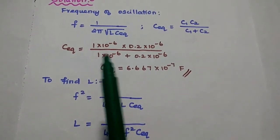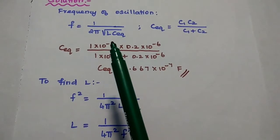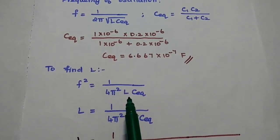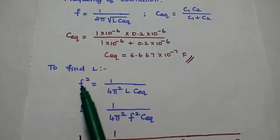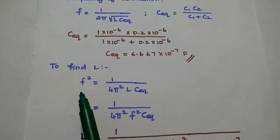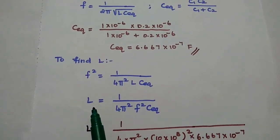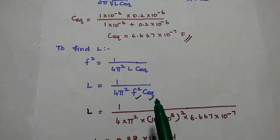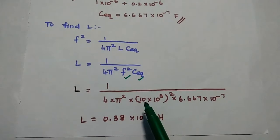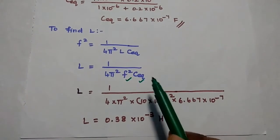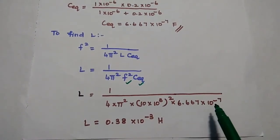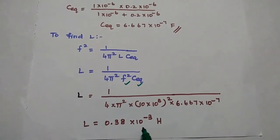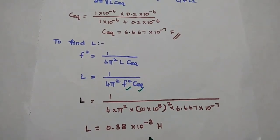Next, we find the inductance value using the frequency formula. Since L is inside the square root, we square both sides to get F² = 1 / (4π² · L · C_equivalent). Rearranging with the unknown on the left: L = 1 / (4π² · F² · C_equivalent). Substituting F = 10 × 10³ and C_equivalent = 6.667 × 10⁻⁷, we get L = 0.38 × 10⁻³ henry, which is 0.38 millihenry.